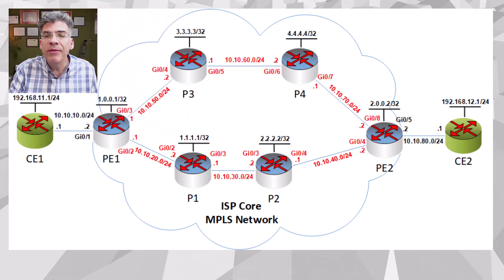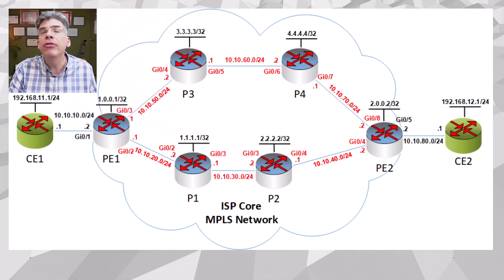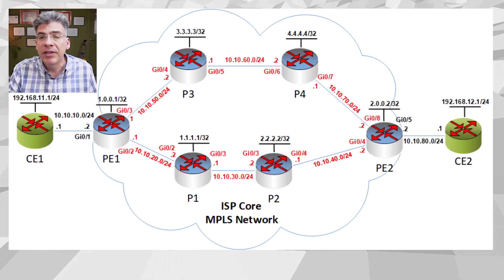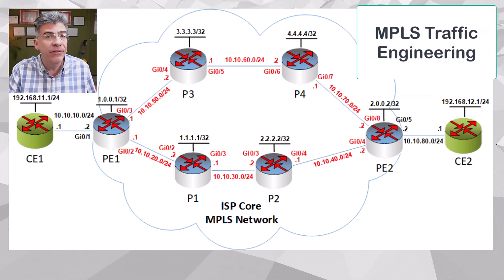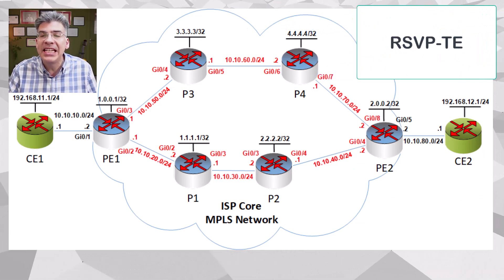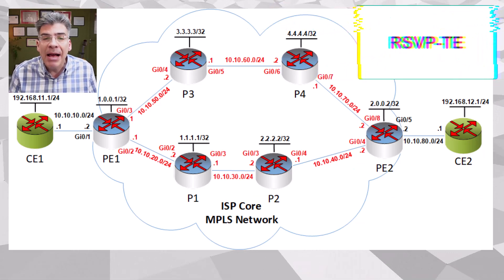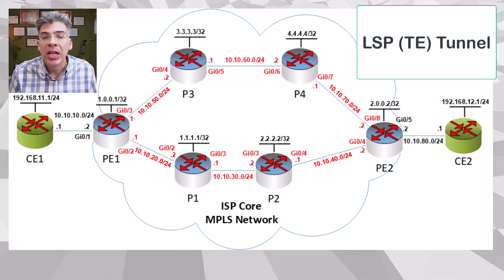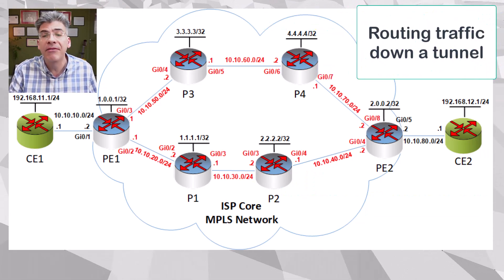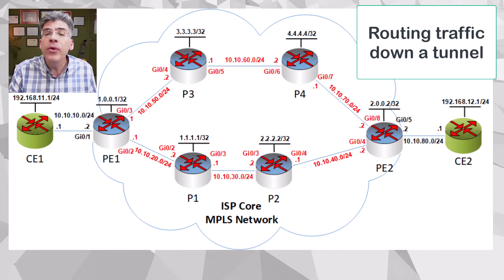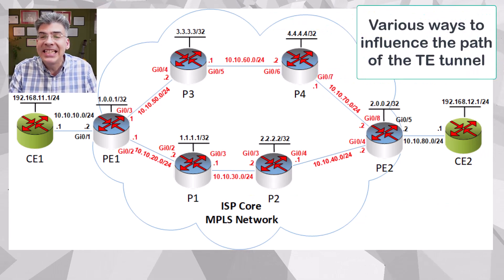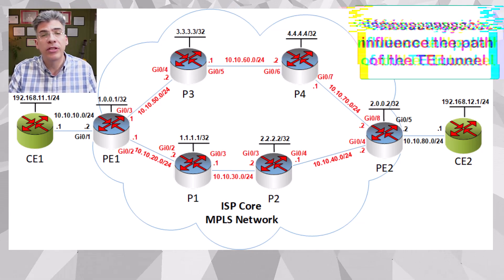Over the past few videos, we've gone through several configuration features of MPLS-TE. We've configured MPLS-TE itself, the OSPF-TE underlay, the RSVP-TE mechanism, and we've established an LSP tunnel. We've examined how to route traffic down that tunnel in various ways, and we've also explored different methods of affecting the path a TE tunnel will take through the topology.